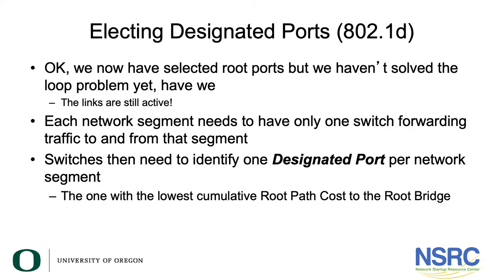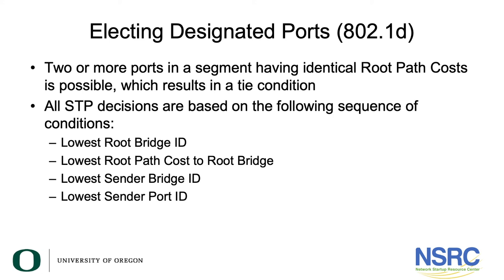Now that we have root ports, step three addresses the remaining loop problem — all links are still active. Each network segment needs only one switch forwarding traffic, identified as the designated port — the one with the lowest cumulative root path cost to the root bridge. When two or more ports in a single segment have identical root path costs, a tie-breaking sequence is used: first, lowest root bridge ID; second, lowest root path cost; third, lowest sender bridge ID; and fourth, lowest sender port ID.